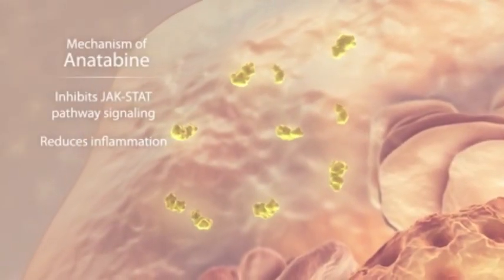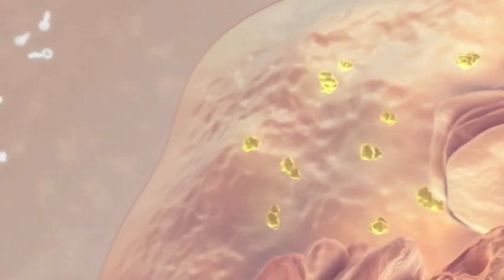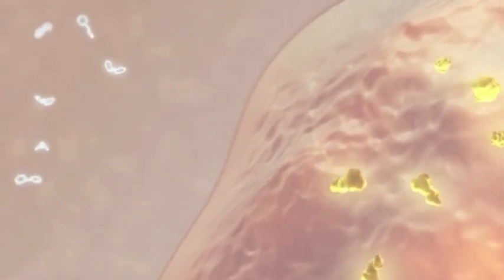Preclinical studies have shown that anatobine inhibits the JAK-STAT pro-inflammatory pathway, thereby reducing inflammation.